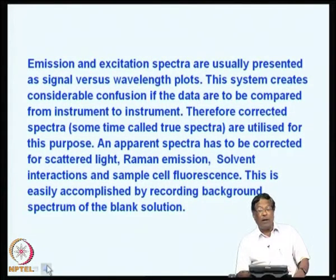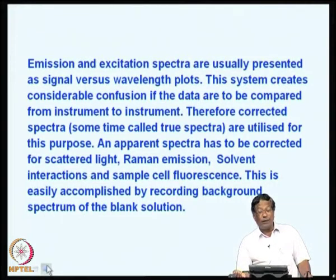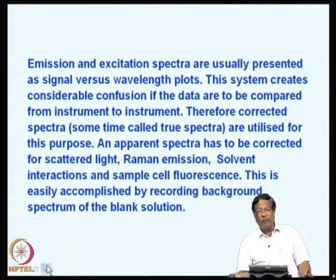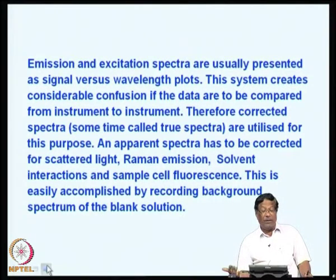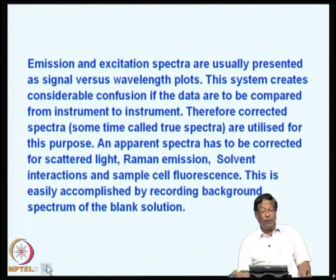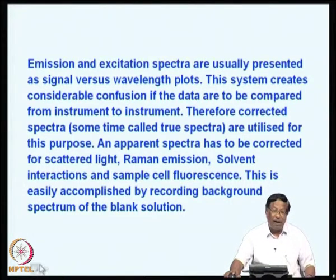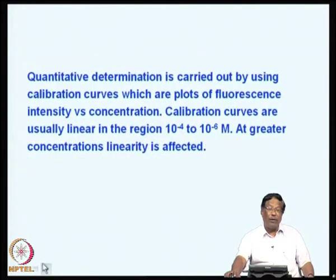Emission and excitation spectra are usually measured and presented as signal versus wavelength plots. This creates considerable confusion if the data are to be compared from instrument to instrument. Therefore, corrected spectra — sometimes called true spectra — are utilized for this purpose. An apparent spectrum has to be corrected for scattered light, Raman emission, solvent interactions, and sample cell fluorescence. This is easily accomplished by recording the background spectrum of the blank solution and then subtracting it from the sample fluorescence.